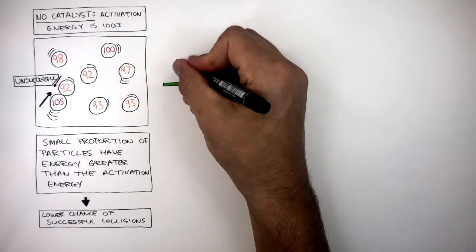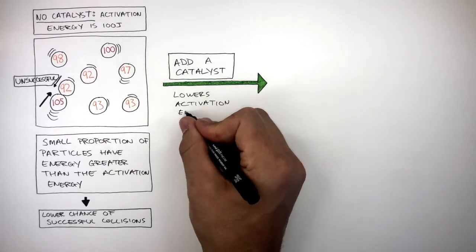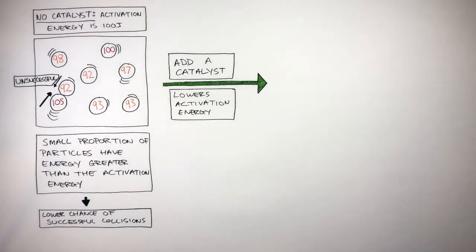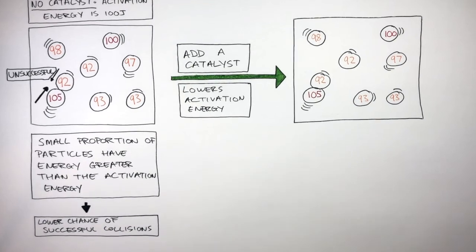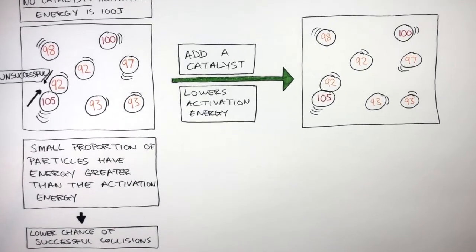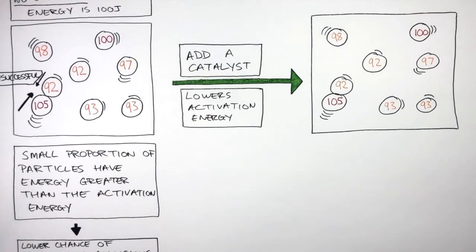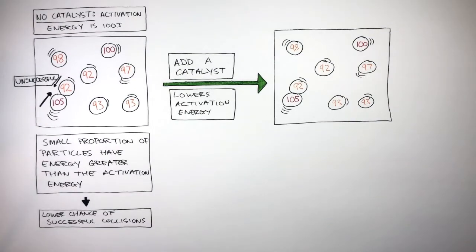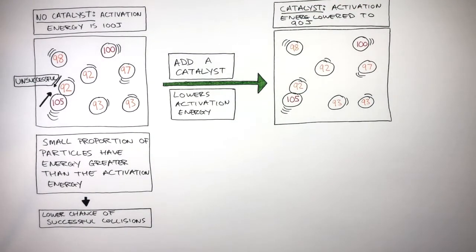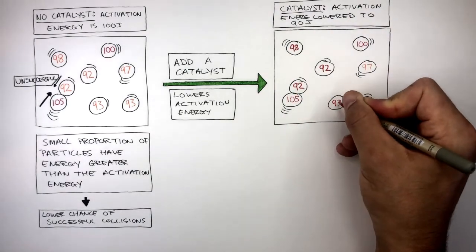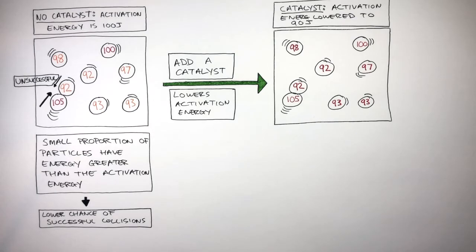When we add a catalyst, this lowers the activation energy by providing an alternative reaction pathway. Here we have the exact same reacting particles with the exact same amount of energy stored. The energy stored has not changed — the only difference is we've added a catalyst. This catalyst has caused the activation energy to be lowered to 90 joules.